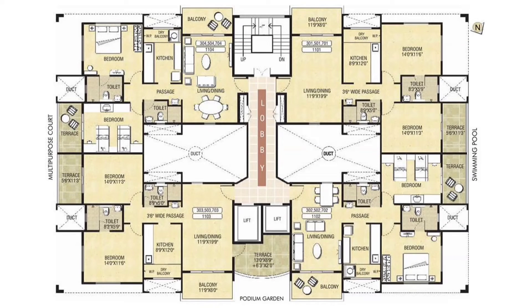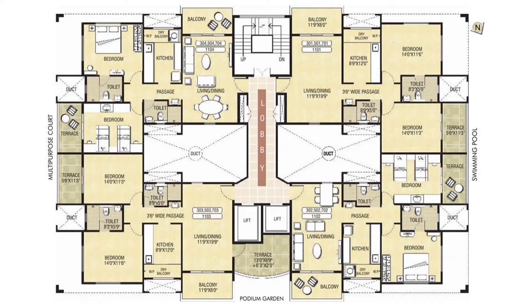In this figure, we can see a plan of a residential building, and here we can see a map of Gujarat state of India.